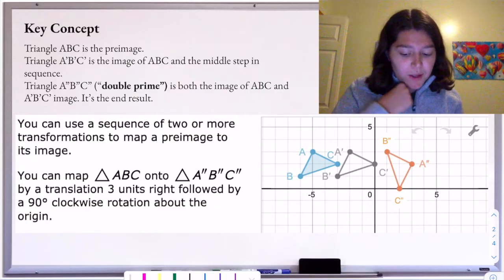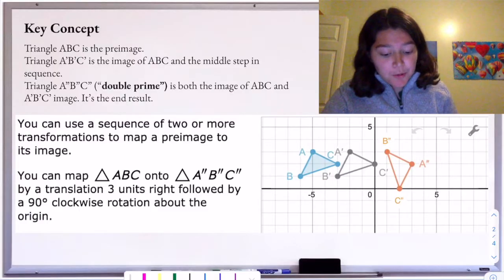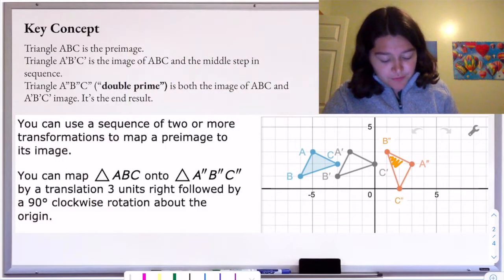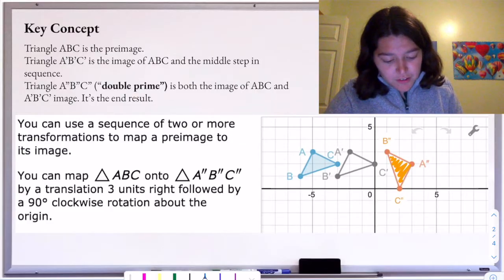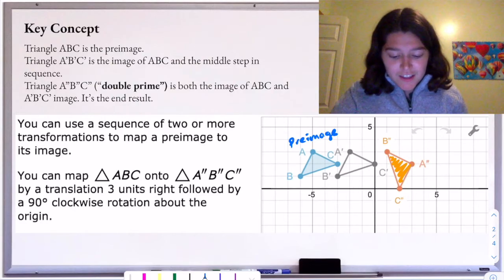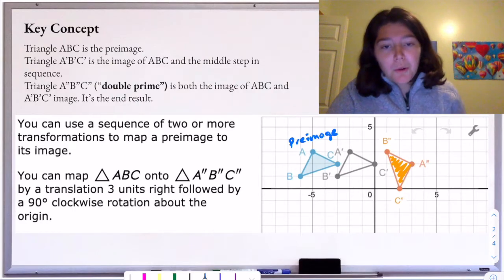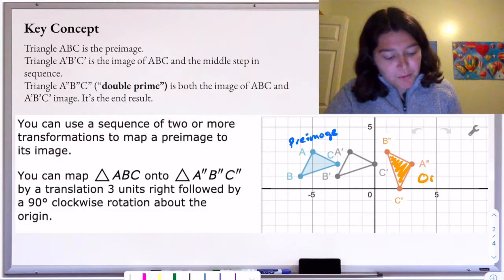Here's an example to summarize the key concept. Here I have triangle ABC, and we're describing a sequence of transformations that takes triangle ABC to triangle A double prime, B double prime, and C double prime, which is here in orange. We're trying to go from our blue triangle to our orange one, and our blue is what we call our pre-image — that is the original figure.